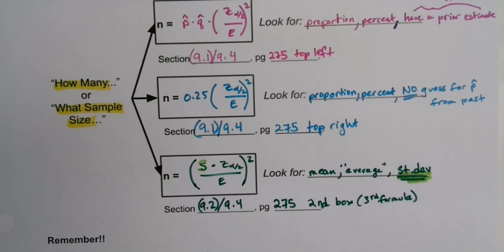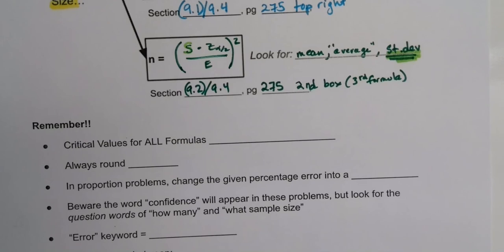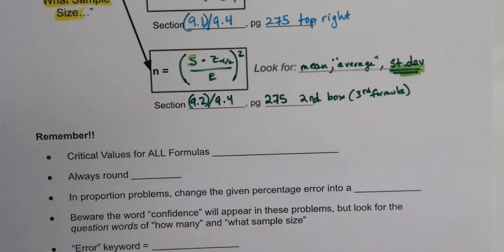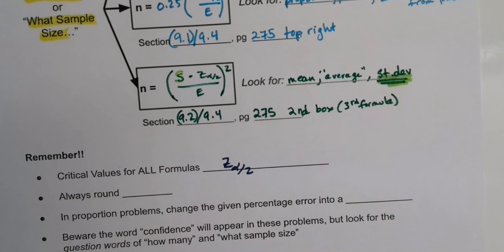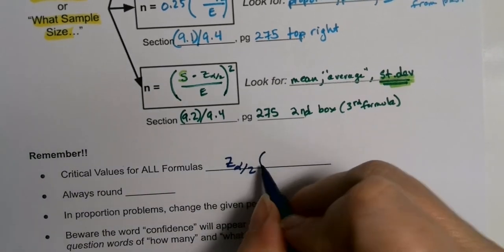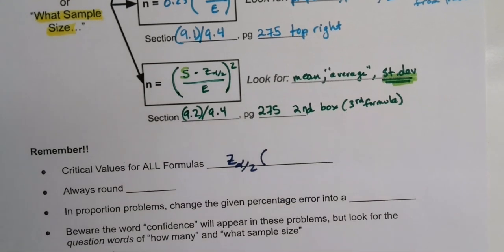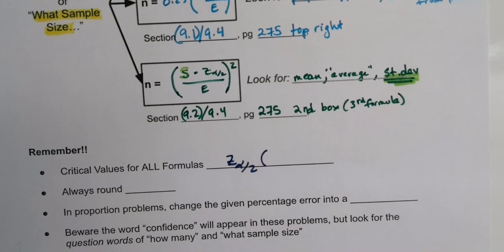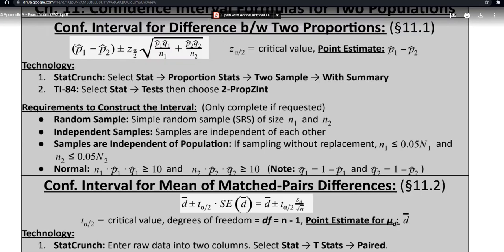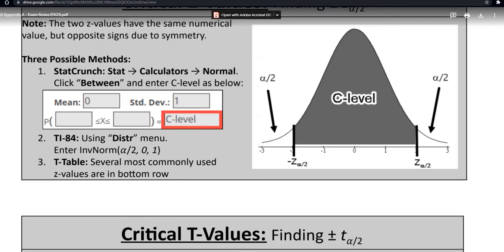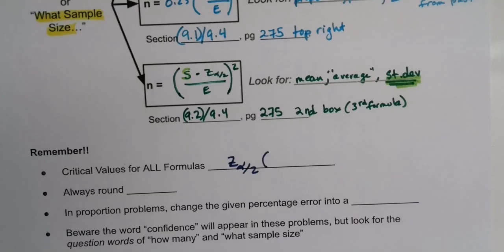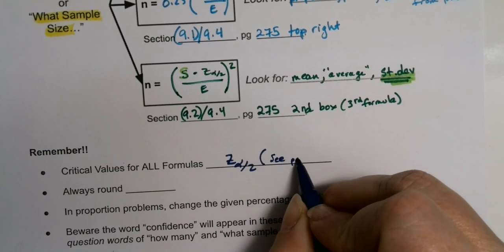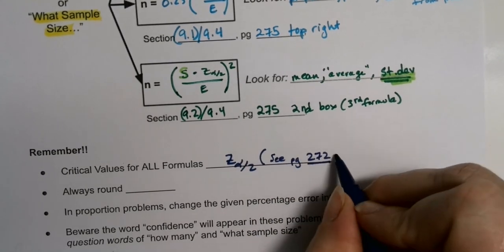All three formulas use the same critical value: z α/2. To find z α/2, refer to the instructions in your exam notes packet — for me that's page 272 — under 'confidence: critical z values' in Appendix A. Check your own packet for the correct page number.